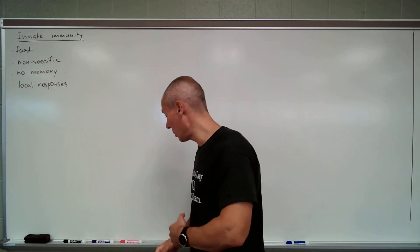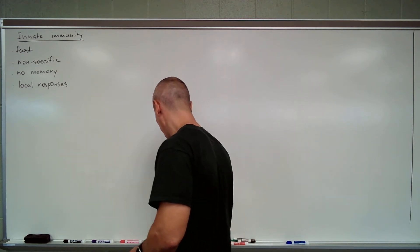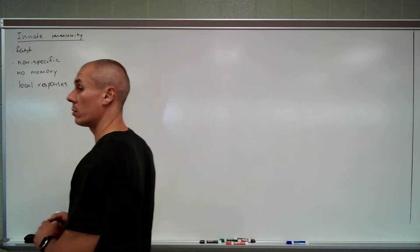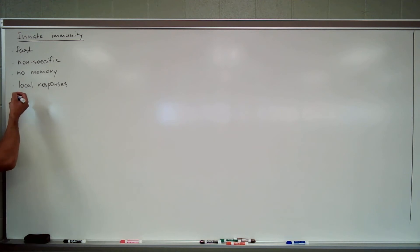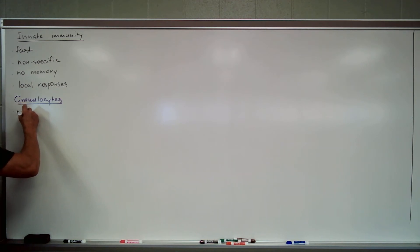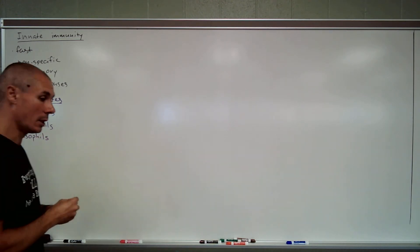So what do you need to know? I want you to know the cells of the innate immunity first of all. So white blood cells, and we can divide them into two categories. White blood cells, there are granulocytes. So three categories: neutrophils, eosinophils, and basophils.